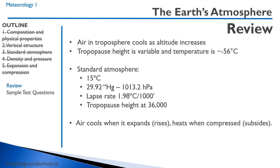To recap: air in the troposphere cools as altitude increases. The tropopause height is variable, and the temperature is minus 56 degrees Celsius. The standard atmosphere is 15 degrees Celsius, 29.92 inches of mercury, 1013.2 hectopascals, a lapse rate of 1.98 degrees Celsius per thousand feet, and a tropopause height of 36,000 feet. Air cools when it expands or rises, and heats up when compressed or subsides.